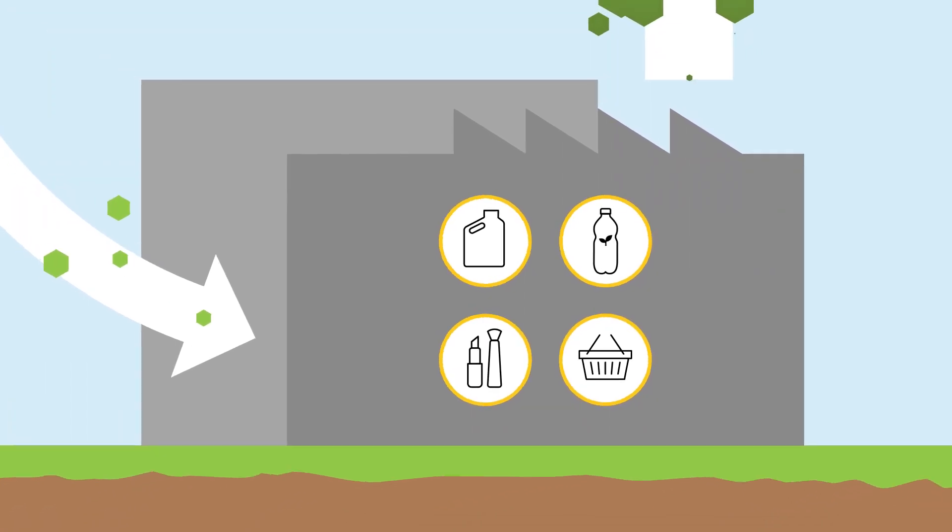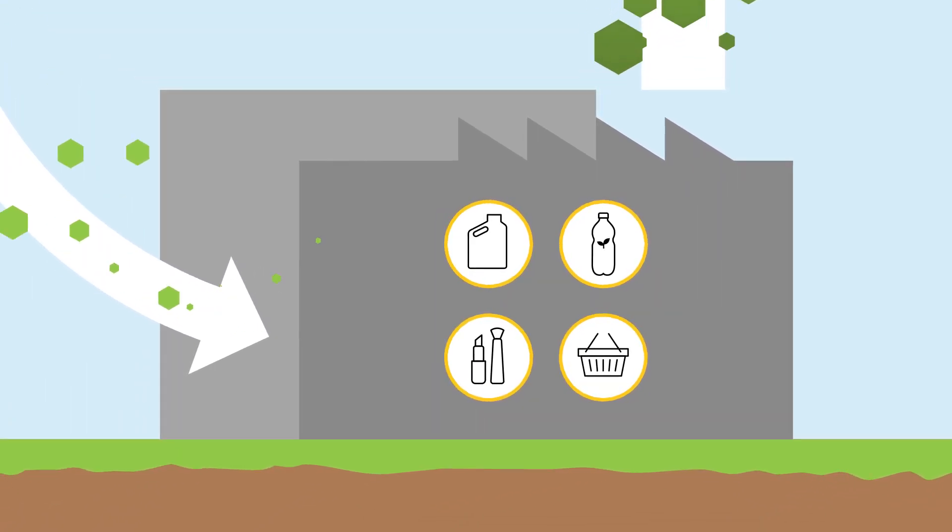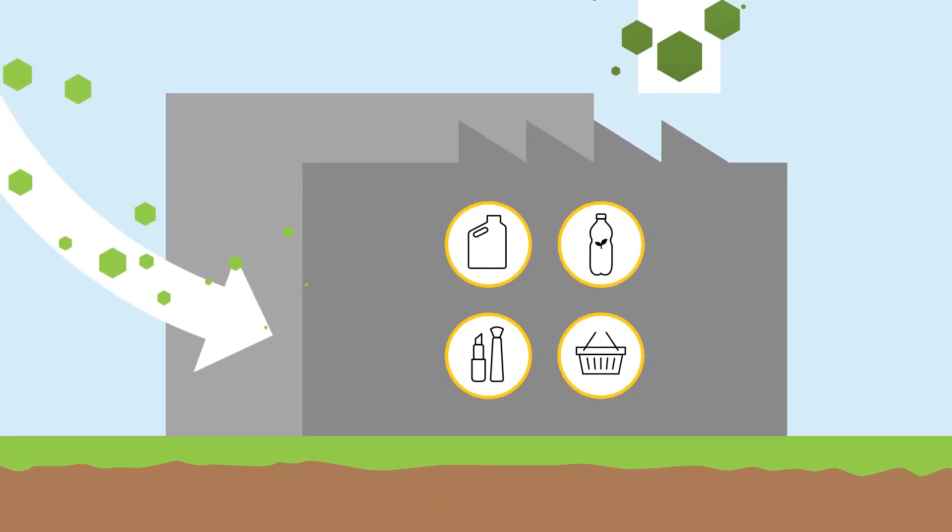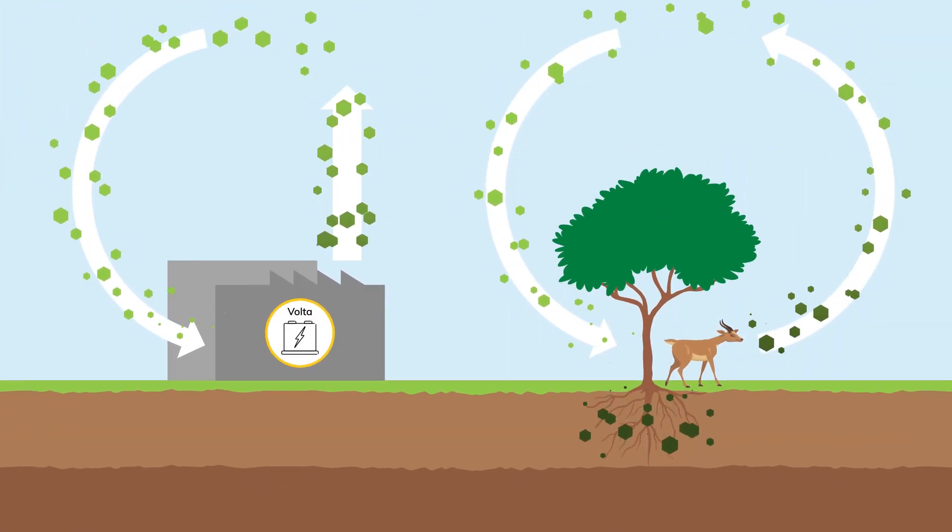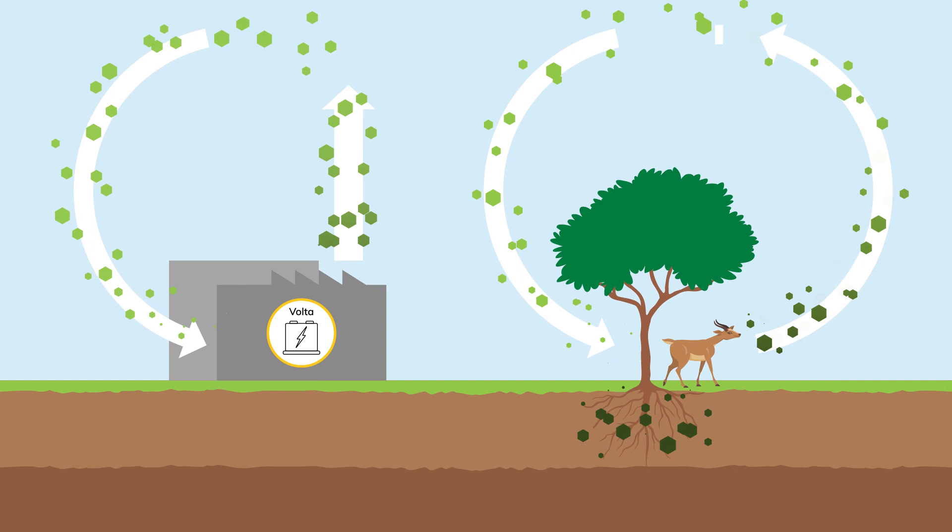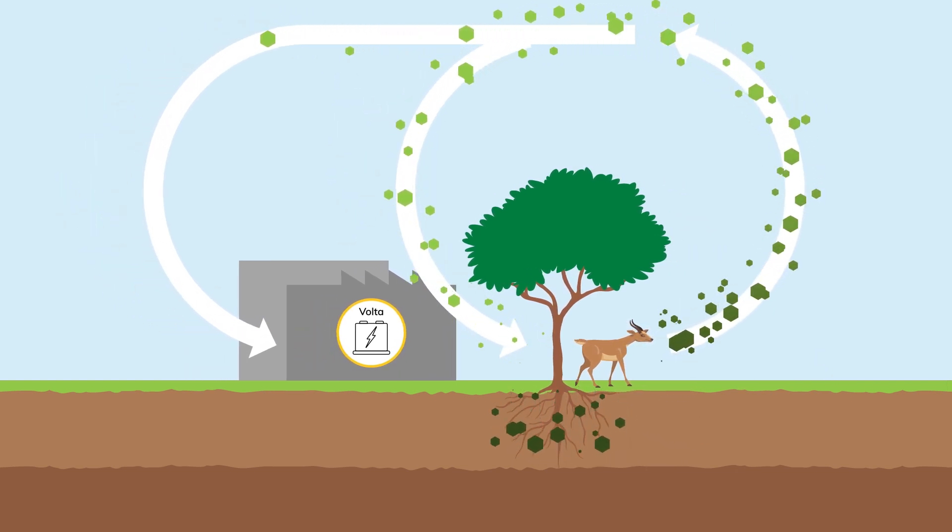We can make the products we want by using what would have been waste as a carbon source that can be reused over and over again. This process drastically reduces the need for fossil resources and decreases greenhouse gases in the atmosphere, contributing to a greener world and a perfectly circular economy.